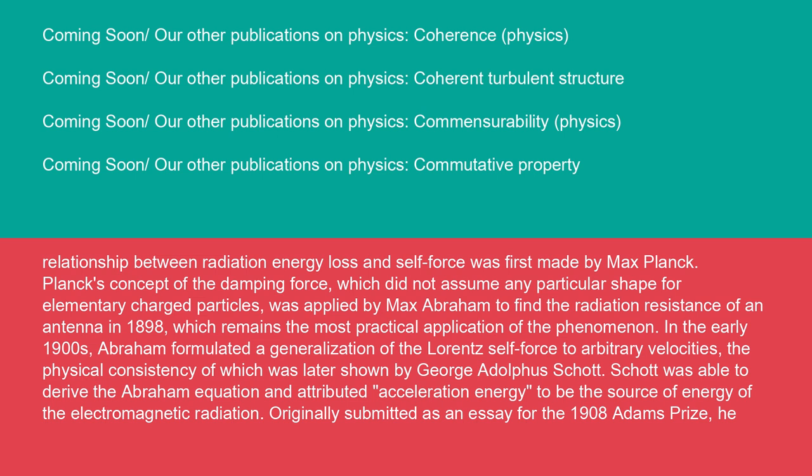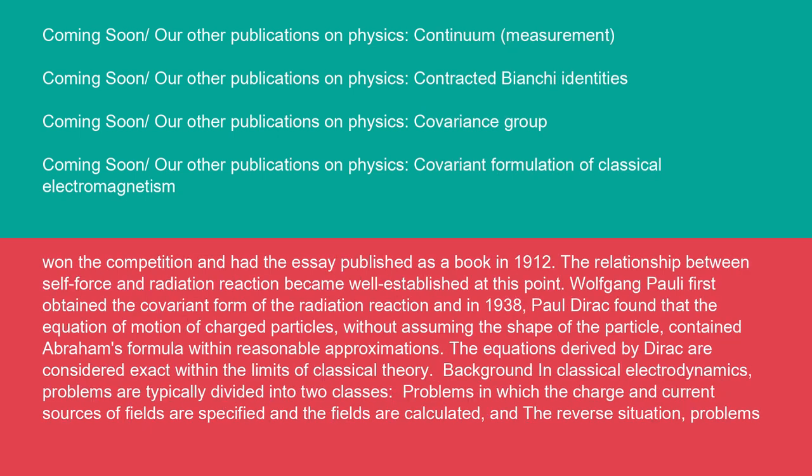In the early 1900s, Abraham formulated a generalization of the Lorentz self-force to arbitrary velocities, the physical consistency of which was later shown by George Adolphus Schott. Schott was able to derive the Abraham equation and attributed acceleration energy to be the source of energy of the electromagnetic radiation. Originally submitted as an essay for the 1908 Adams Prize, he won the competition and had the essay published as a book in 1912.